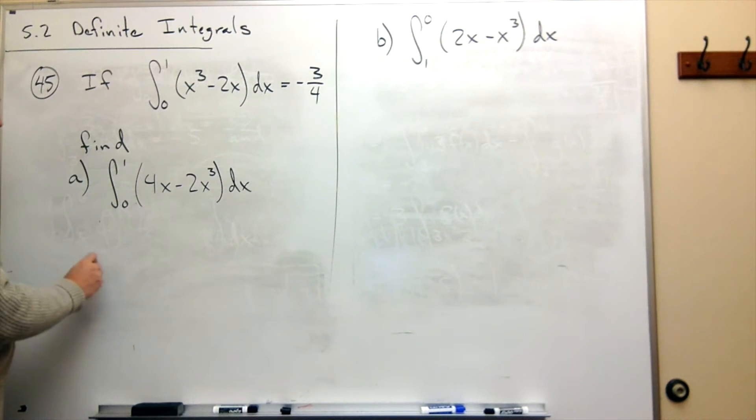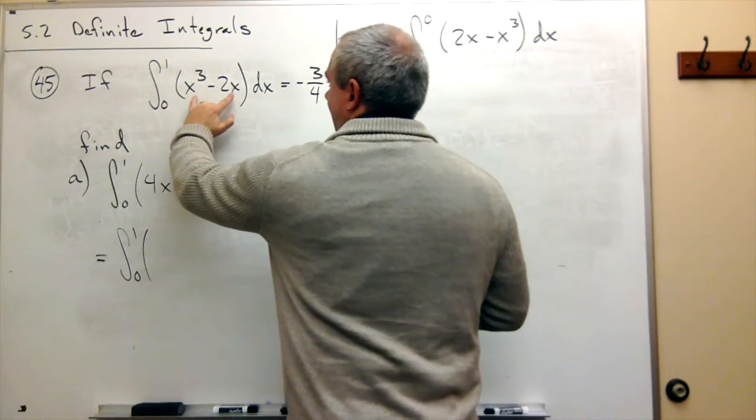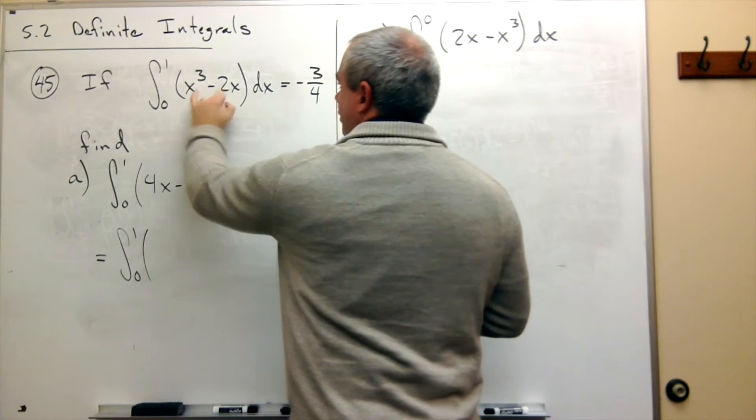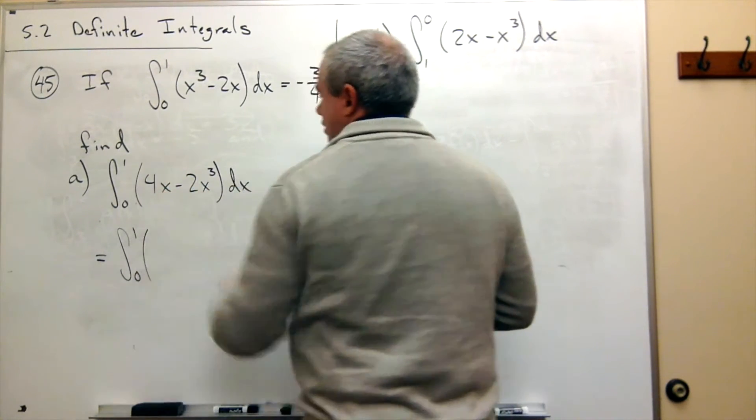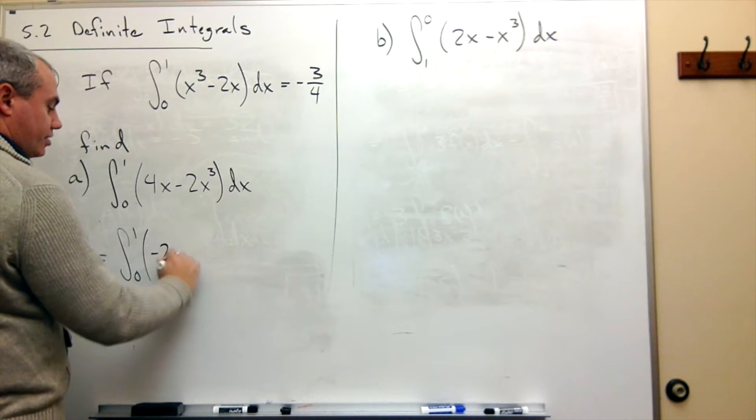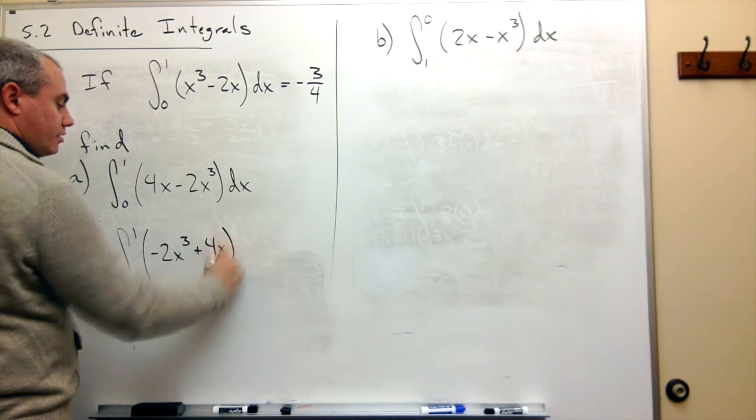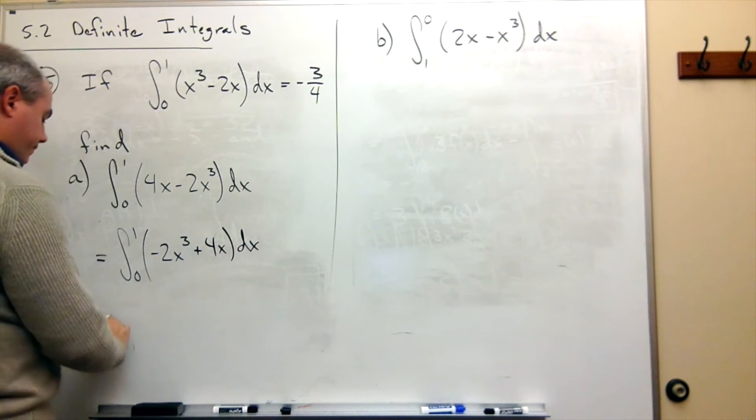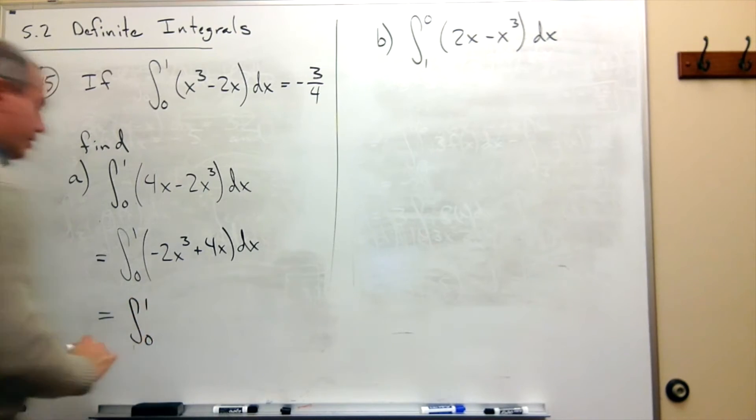So what we should do is look at the rest. So this is equal to the integral from 0 to 1, but now let's just rewrite this a little bit. Notice up here that the x cubed term comes first, and the x term comes second. Here they're reversed. So I'm just going to flip them around really quick, and I'm going to say that this is minus 2x cubed plus 4x dx.